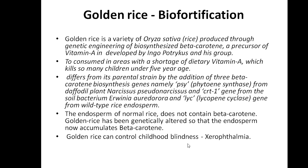Next, golden rice biofortification. It is enriched rice — not just golden in name but also called enriched rice. Golden rice (Oryza sativa) uses genetic engineering to synthesize beta-carotene, which is a precursor of vitamin A. Vitamin A is very important for eye health. Beta-carotene is consumed in areas with a shortage of dietary vitamin A, which kills many children under five years of age, especially in some parts of African countries.